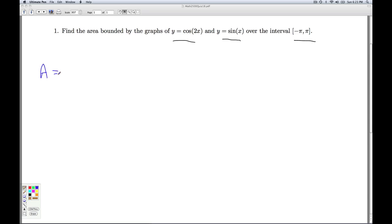We know from class I can get the area between two curves by integrating the top curve minus the bottom curve, dx. So the question remains, how do I figure out which is the top curve and which is the bottom curve? The first thing I have to do is find out where the curves intersect. I need to find the points where y equals cosine 2x as well as y equals sine x.